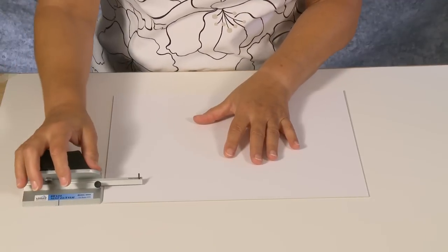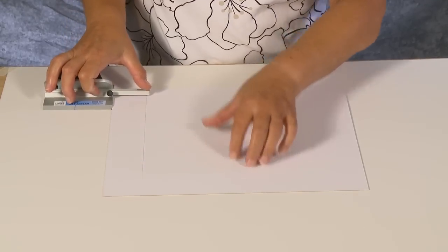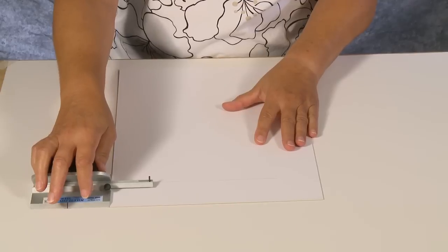Using the pencil head on the marker bar and pressure with your thumb, draw the cutting head along the outside edges of the mat board to draw the four borders.